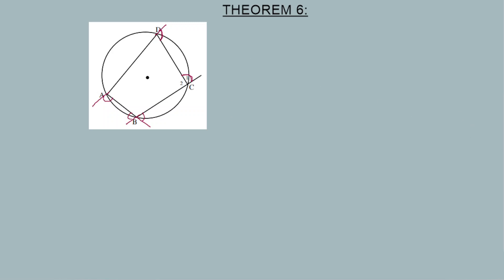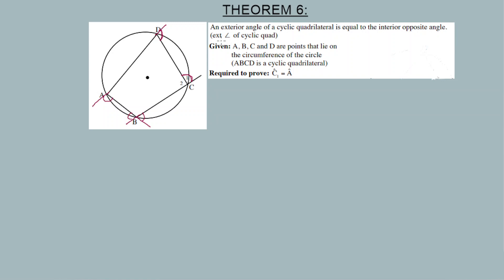With theorem six, the idea is that the external angle of a cyclic quadrilateral is equal to the interior opposite angle. So C1 is equal to A; B2 is equal to angle D; and so on for each exterior angle and its corresponding interior opposite angle.